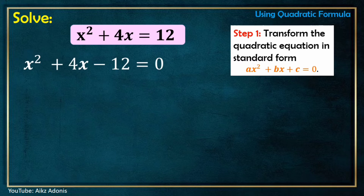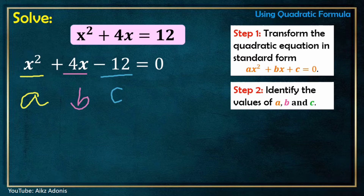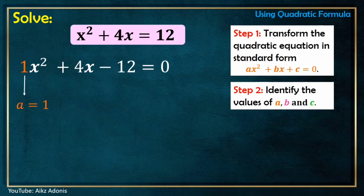The standard form of x squared plus 4x equals 12 is x squared plus 4x minus 12 equals 0. But if the given quadratic equation is already in standard form, you will no longer perform step 1. Step 2: Identify the values of a, b, and c. Remember, the numerical coefficient of x squared is a, the numerical coefficient of x is b, and c is the constant. In this quadratic equation, a is equal to 1. How about b?